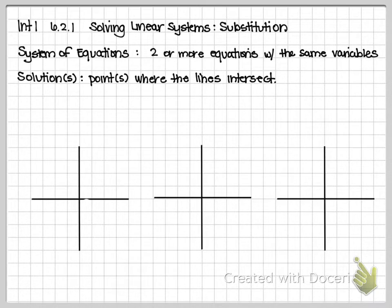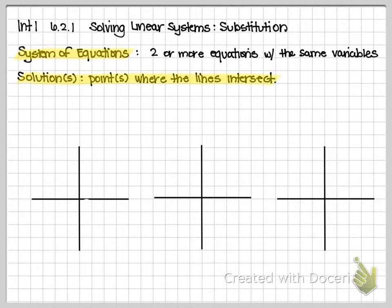So we've been doing it, we just didn't call it that. A system of equations is two or more — you have to have at least a pair of equations with the exact same variables: X's and Y's, or M's and N's, or A's and B's, or P's and Q's, or whatever. The big thing here is the solution: the solution is the points — or single point — where the graphs run into each other.